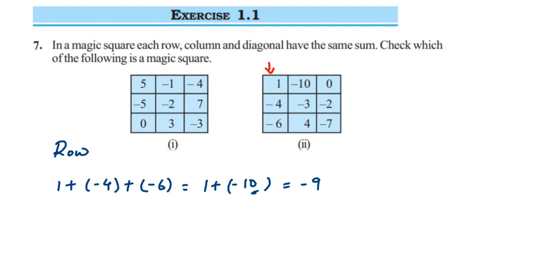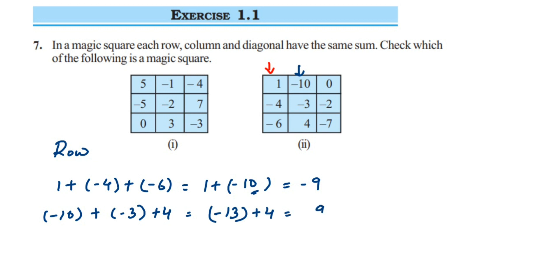The second row is (−10) + (−3) + 4. Adding same-sign integers: −10 and −3 give −13. Then −13 + 4: subtract, 13 − 4 = 9, sign is negative (13 is greater), so −9. The last row is 0 + (−2) + (−7). −2 and −7 same sign: 2 + 7 = 9, sign remains negative, so −9. All three rows give −9.